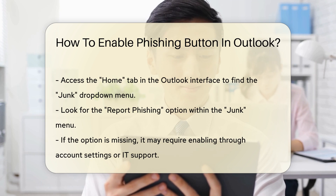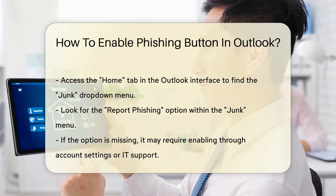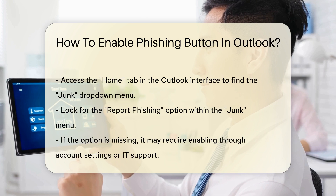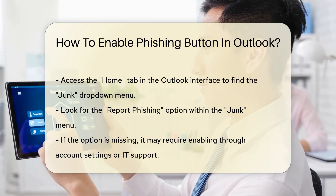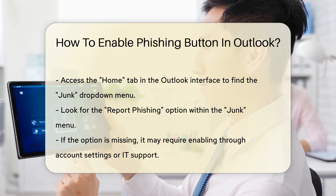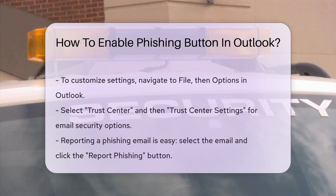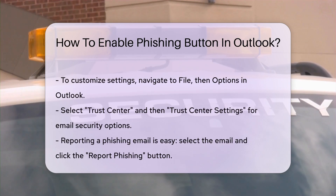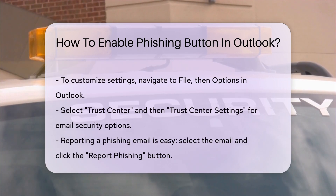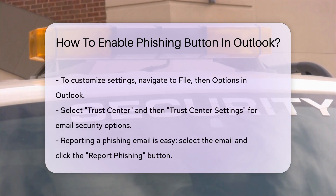Next, if you want to customize your settings, go to File, then Options. In the Options window, select Trust Center followed by Trust Center Settings. Here you can find settings related to email security, including phishing options.